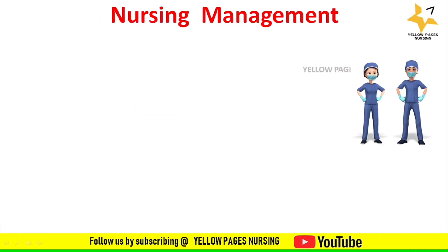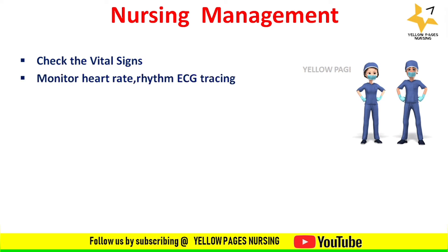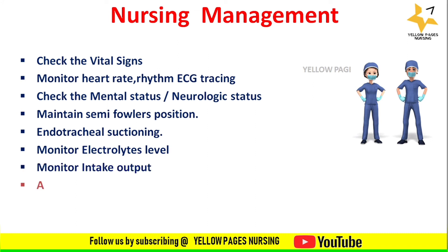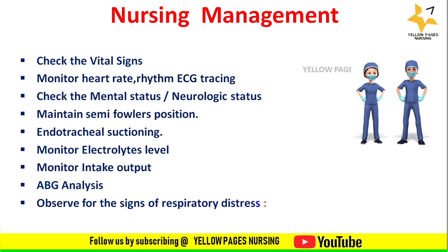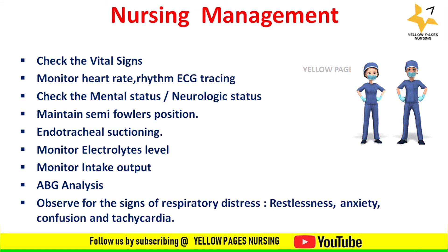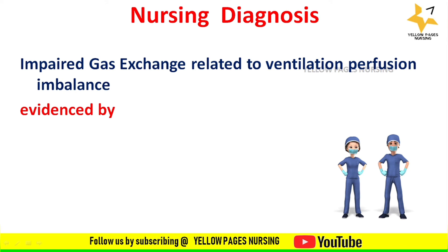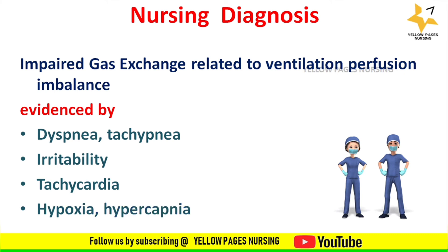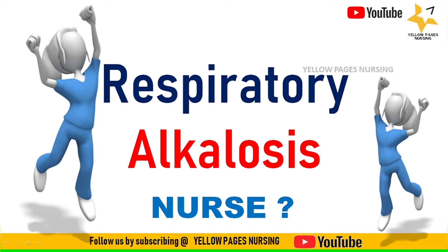Nursing management of respiratory acidosis includes checking vital signs, monitoring heart rate, rhythm, and ECG tracing, checking mental and neurological status, maintaining semi-Fowler's position, endotracheal suctioning as indicated, monitoring electrolyte levels, monitoring intake and output, ABG analysis, and observing for signs of respiratory distress such as restlessness, anxiety, confusion, and tachycardia. The main nursing diagnosis is impaired gas exchange related to ventilation-perfusion imbalance, evidenced by dyspnea with exertion, tachypnea, irritability, tachycardia, hypoxia, and hypercapnia.